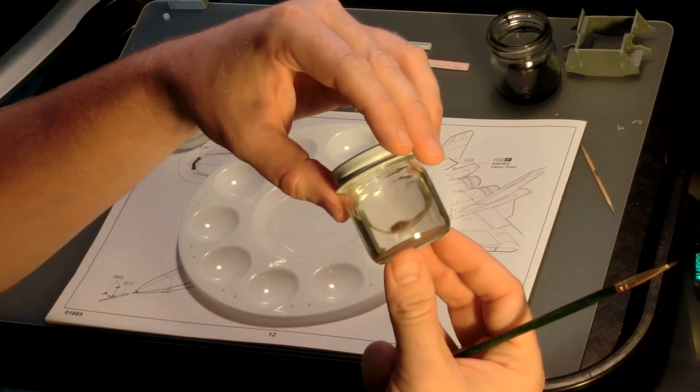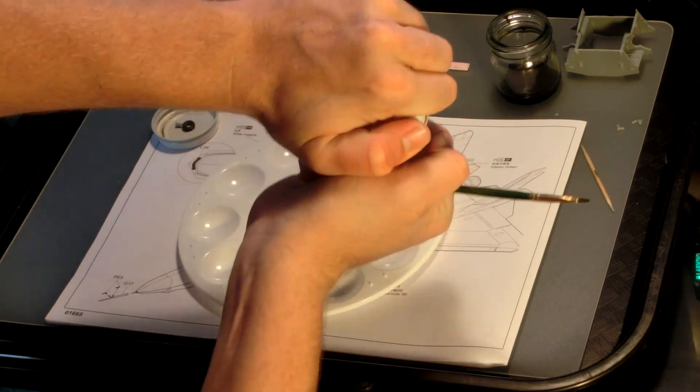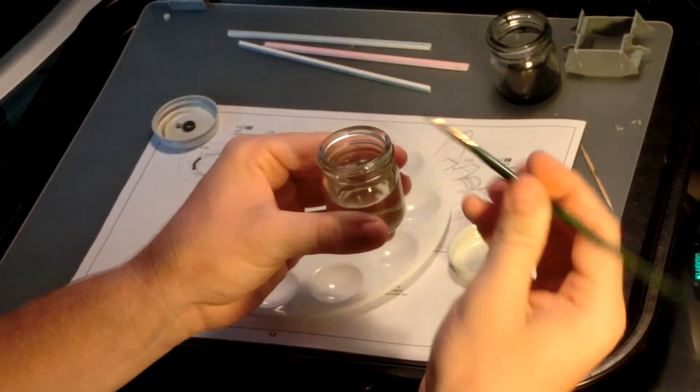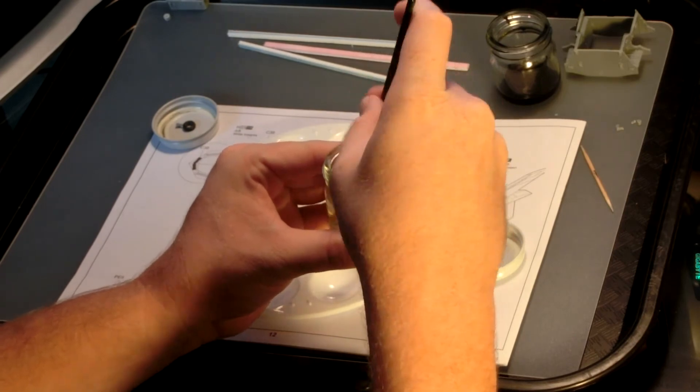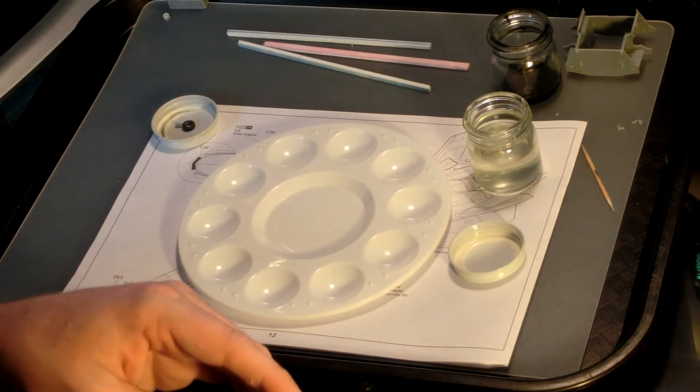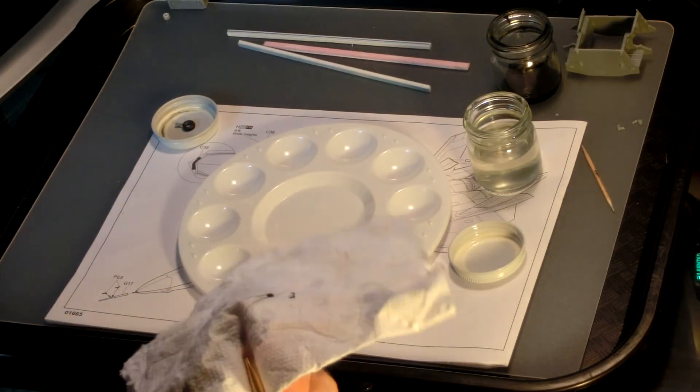Always clean your paintbrush. If you let paint dry on the brush, it will ruin the brush. To clean it, use the jar of thinner, again not the dropper bottle, and swish the paintbrush around in the jar. I like to gently act like I'm painting the bottom or sides of the jar, too.